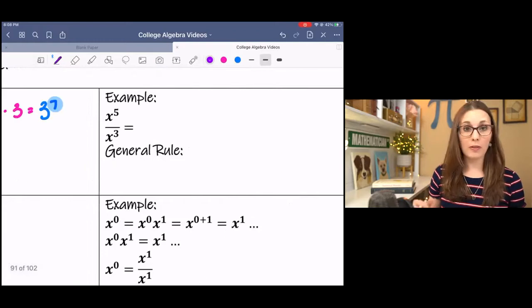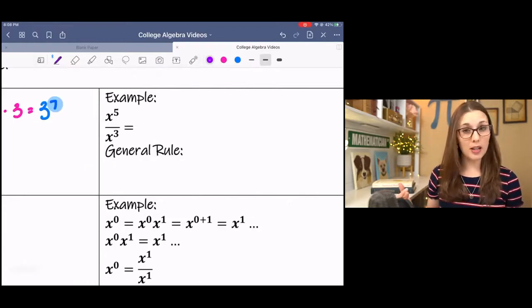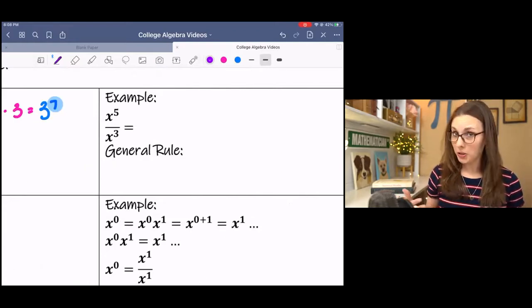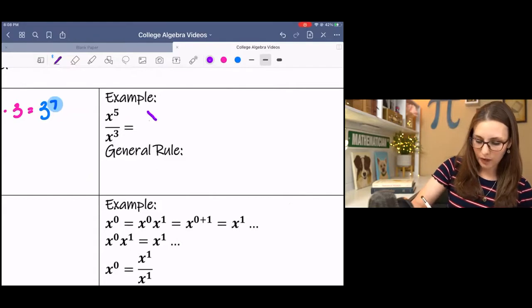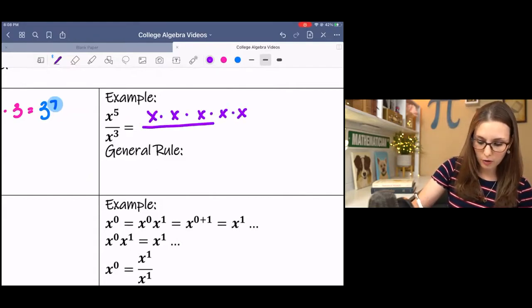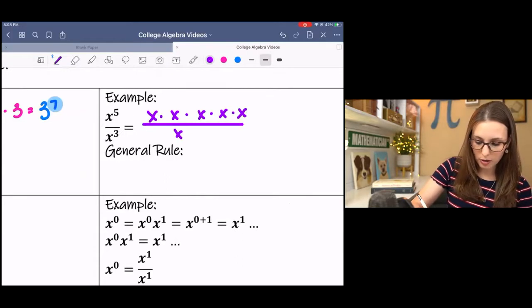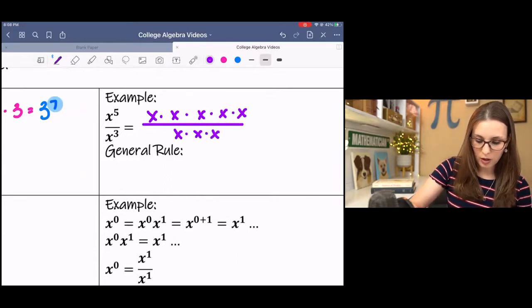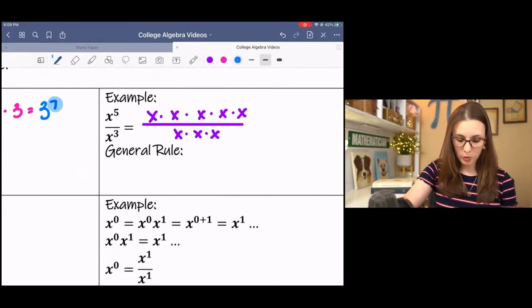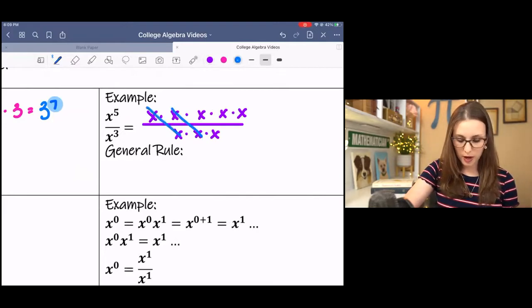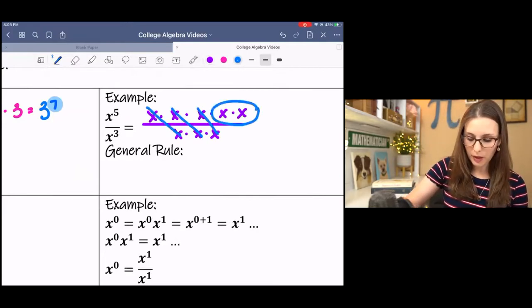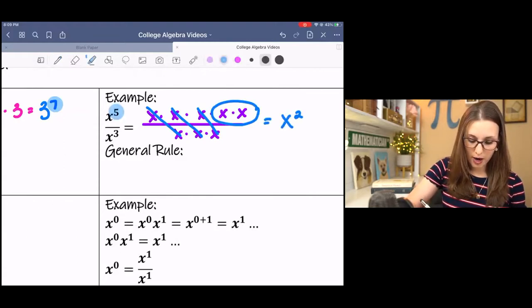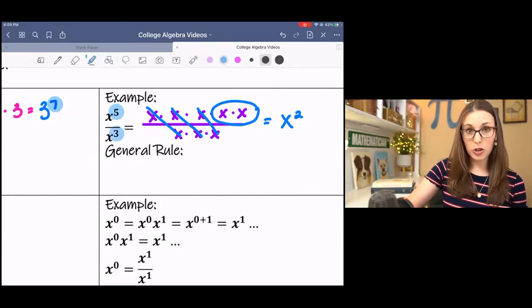In the next example, we have division. You might be able to guess what division might yield. Let's take a look at it. x to the fifth over x to the third. We have a common factor in the numerator and denominator, so those are going to divide to one. And we're left with x squared. 5 minus 3 is 2.